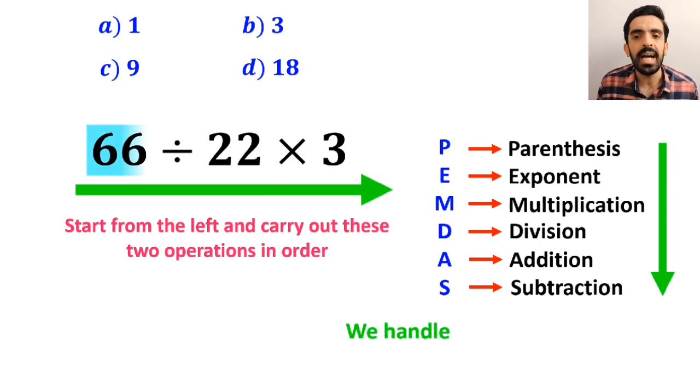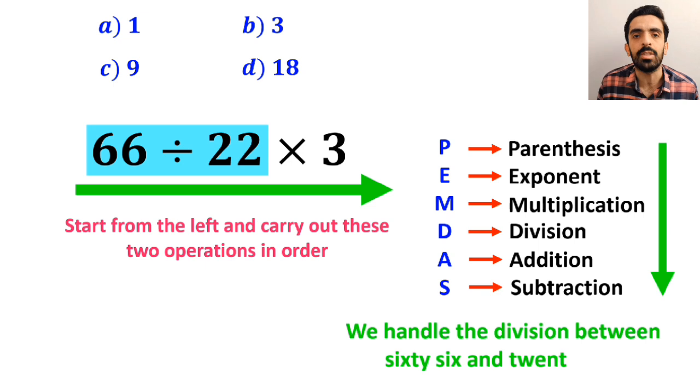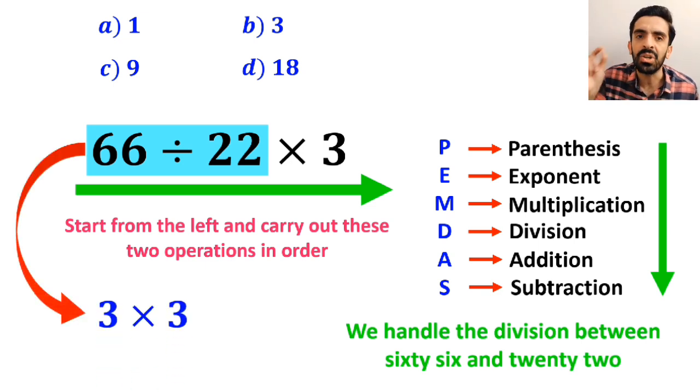So first we handle the division between 66 and 22, which simplifies the expression to 3 multiplied by 3. And finally, the answer becomes 9.